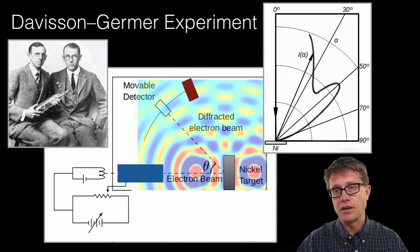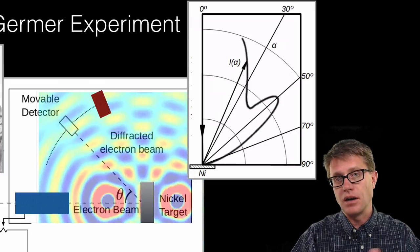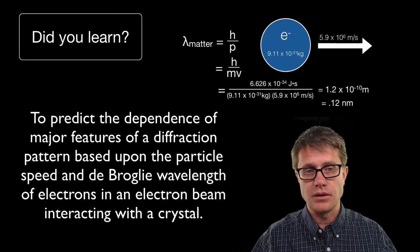And this is their data. They found at different angles they would have more or less amounts of this electric charge. And therefore the electrons were interfering with one another.